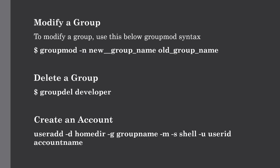Now we will see how to modify and delete a group. For modifying a group, use the groupmod command with the syntax: groupmod -n followed by the new group name and then the old group name. For deleting a group, it is a very simple procedure — just use the groupdel command followed by the group name that you want to delete from your Unix system.